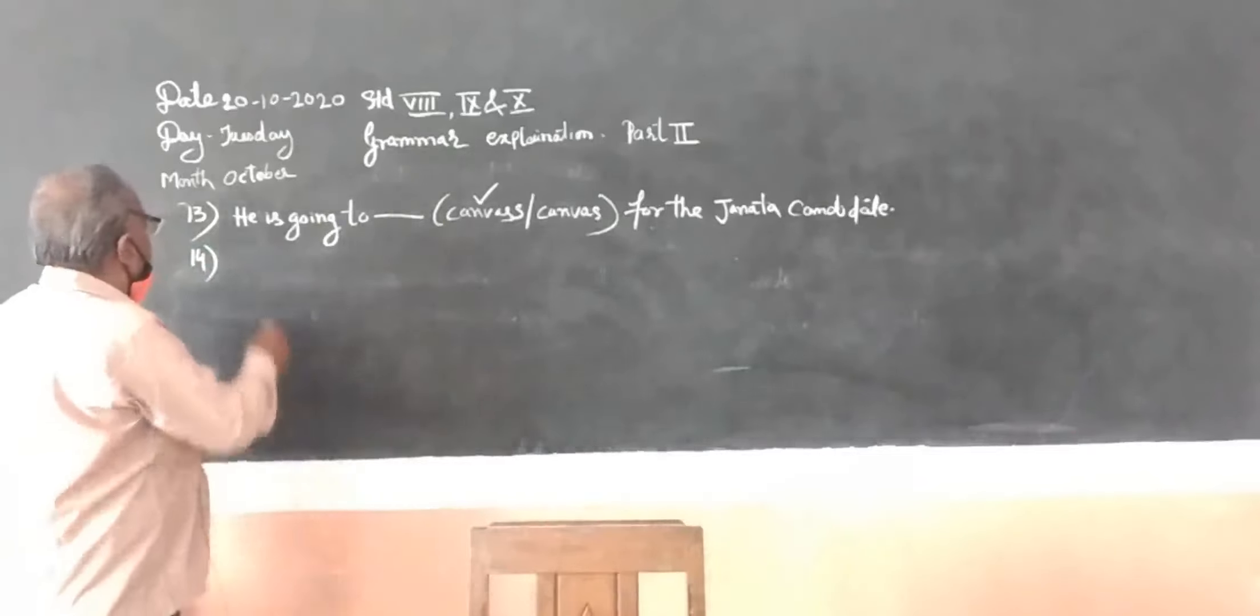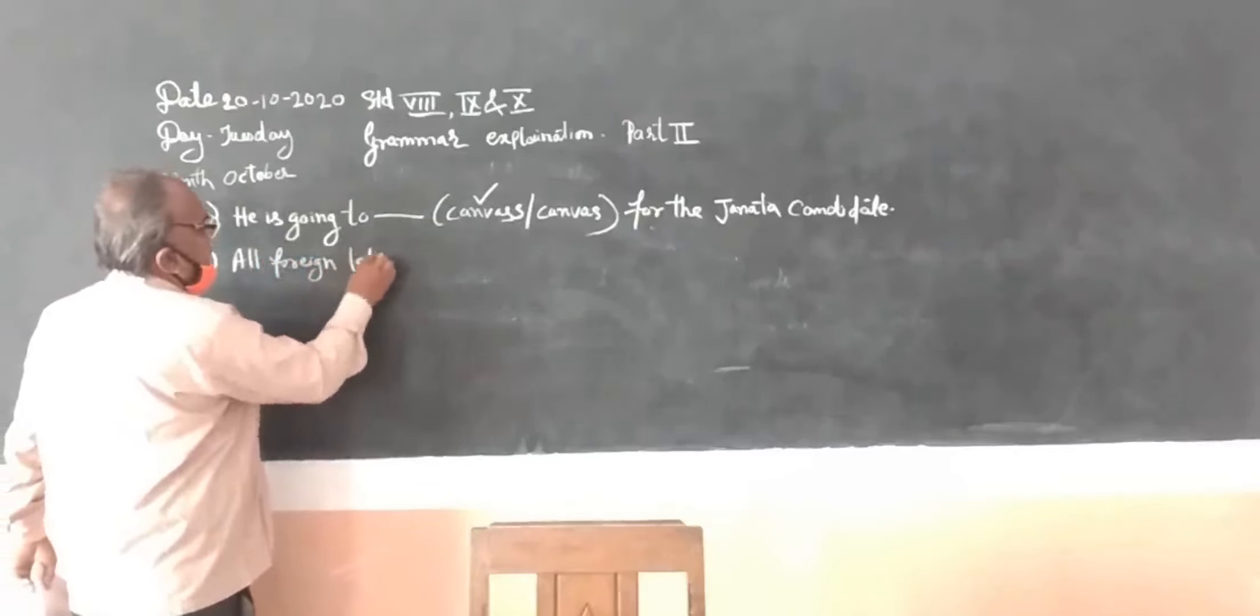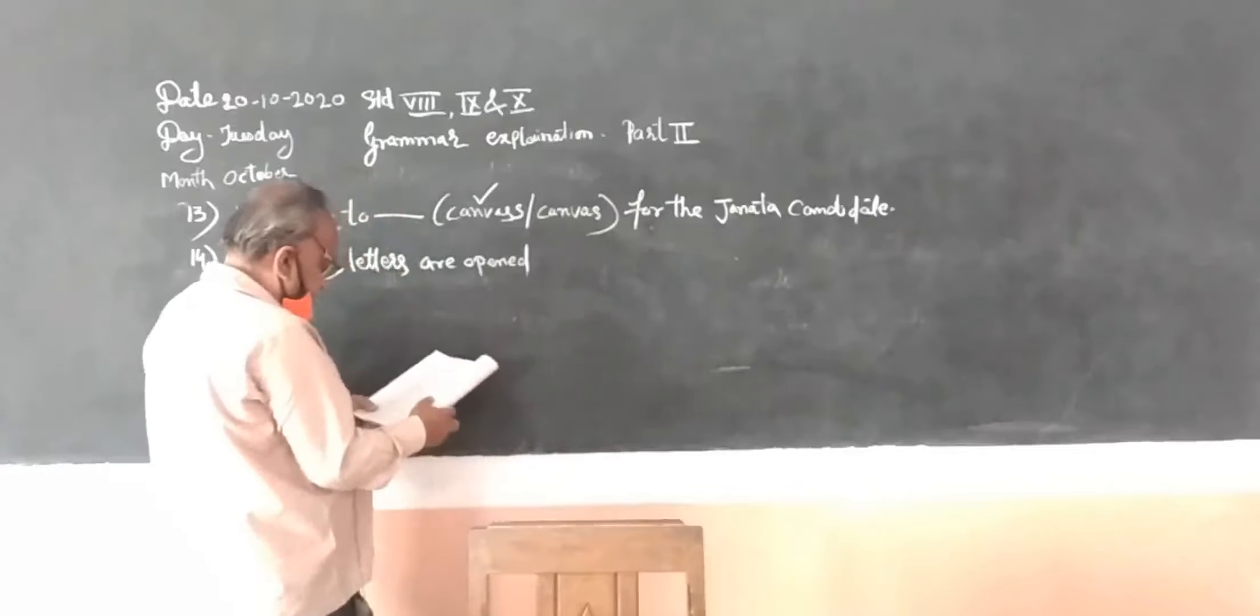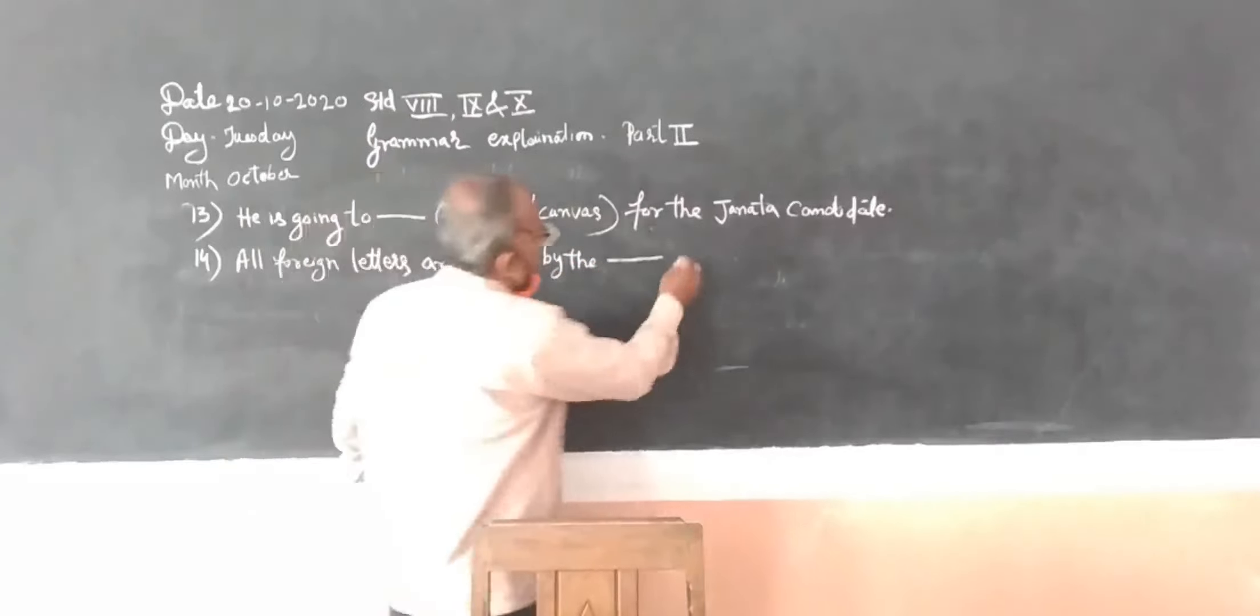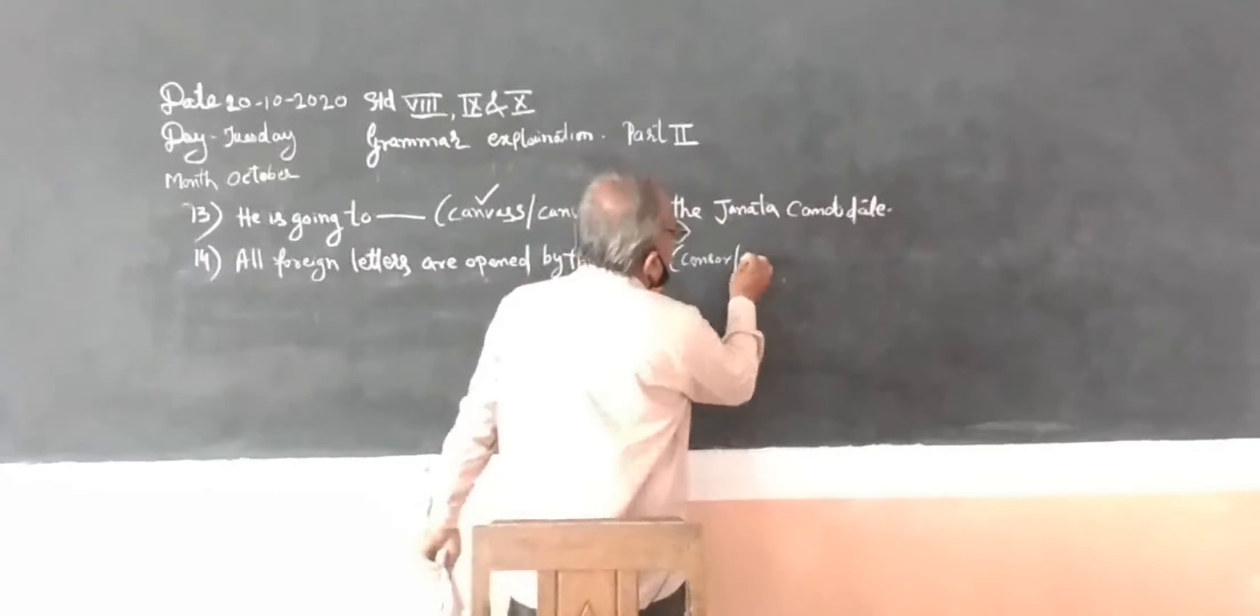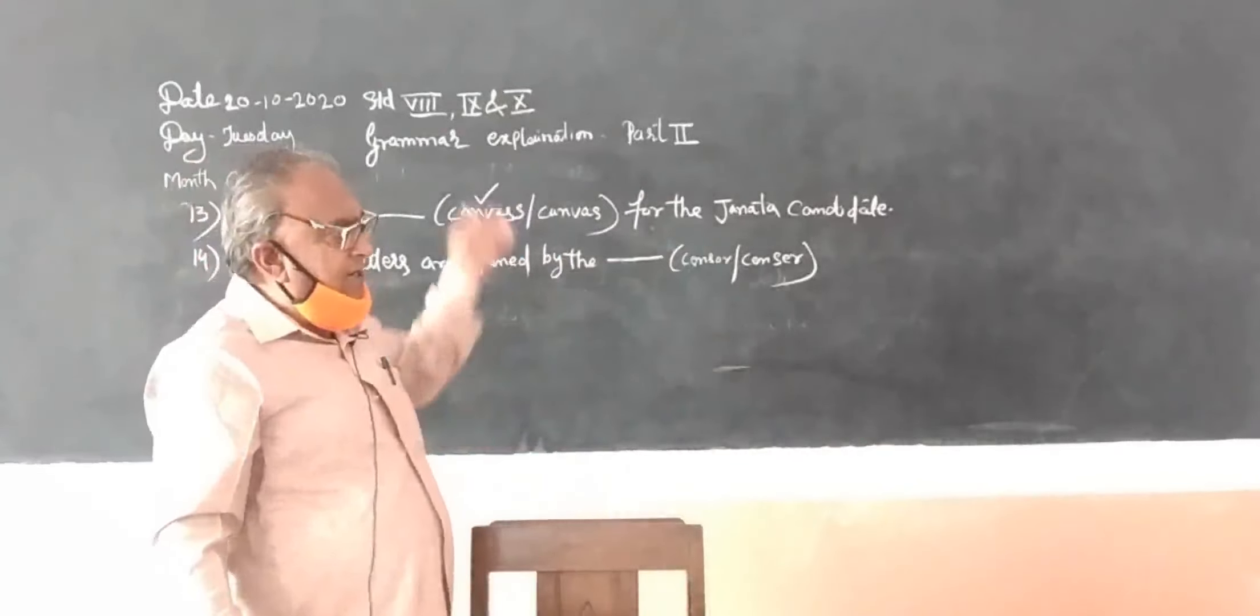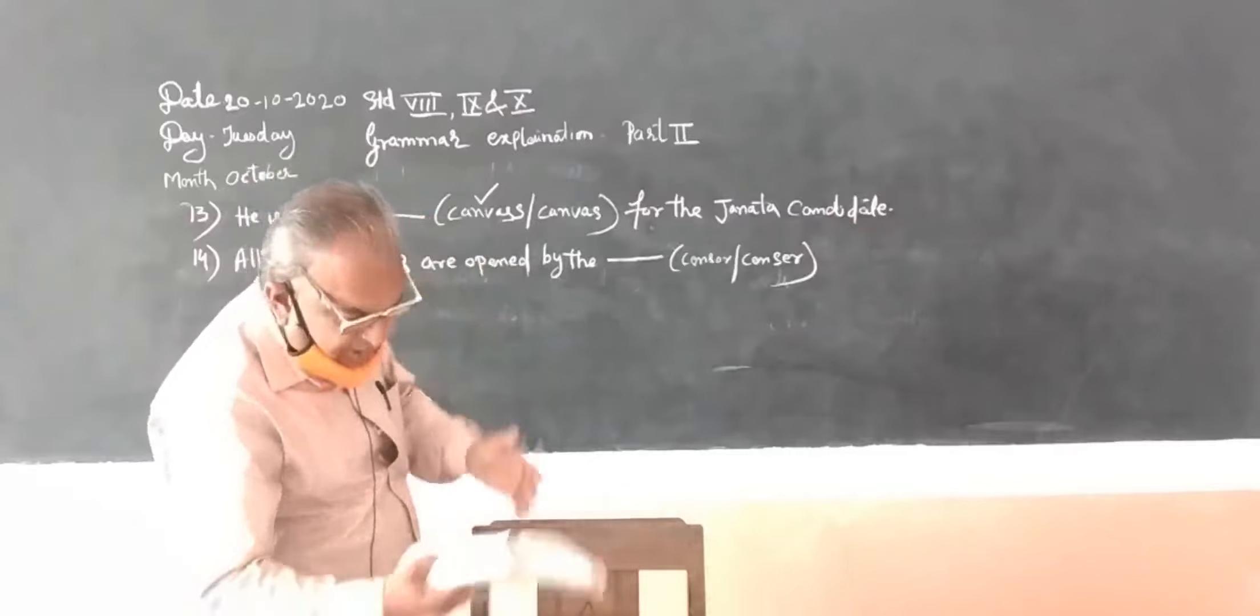Fourteen: all foreign letters are opened by the C-E-N-S-O-R censor and S-E-N-S-O-R sensor. So let us see who opens foreign letters. It is a rule that when we receive letters from foreign countries, they are checked, they are censored. So which sensor we have to use is censor.